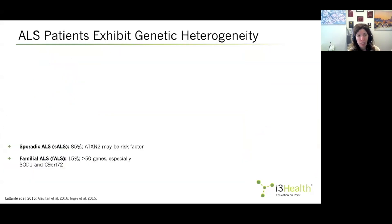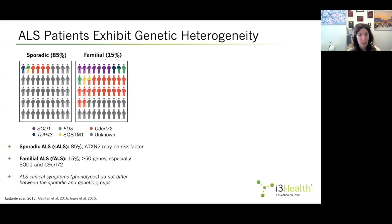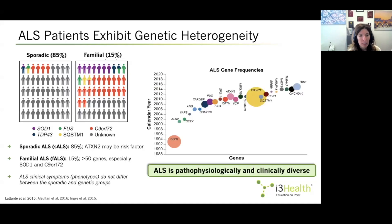ALS patients exhibit genetic heterogeneity. The majority of people with ALS do not carry a Mendelian mutation that causes the disease — only 15% do. However, there are other genes that may be risk factors even in the sporadic population, such as TBK1 or other genes. Even people with no affected family members can carry a mutation. As you can see in the figure, even the sporadic ALS population still harbors some genetic mutations, and the number of genes discovered over time has continued to grow.